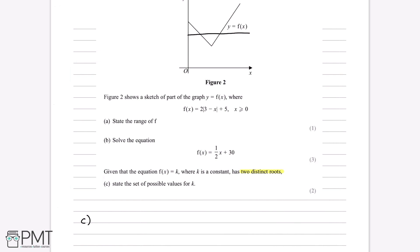The points where k does not have two distinct roots: first, if k is less than or equal to the minimum value, it would have no roots. We worked out in part a that the minimum y-value is 5. If k is less than 5, f of x equals k has no roots. If k equals 5 exactly, there is only one point of intersection and therefore only one root. So k must be strictly greater than 5.